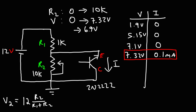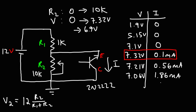Increasing R2 from this point decreased the voltage. I took the next measurement at 7.21 volts, and the current increased to 0.56 milliamps. Then progressively increasing R2 toward 10k, the next reading was at 7.06 volts and the current was 1.86 milliamps. Increasing R2 even further, the last reading was 6.98 volts, and at this voltage the current was 3.04 milliamps.